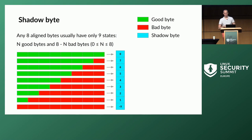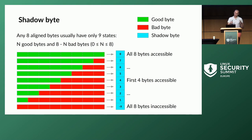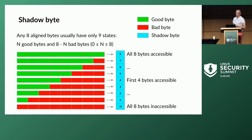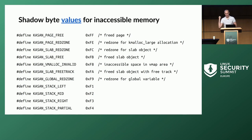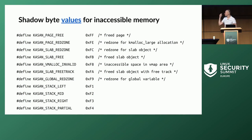The encoding works like this: if all eight aligned bytes are accessible, the corresponding shadow byte value is zero. If only a few of the first bytes are accessible — for example, if seven bytes are accessible — the value is seven. If all bytes are inaccessible, KASAN uses a certain negative value. These different negative values allow differentiation between different types of inaccessible memory, such as freed page alloc memory, freed slab memory, stack, globals, and so on.